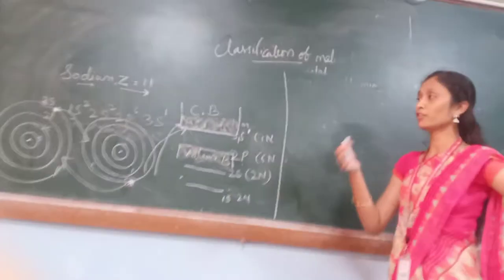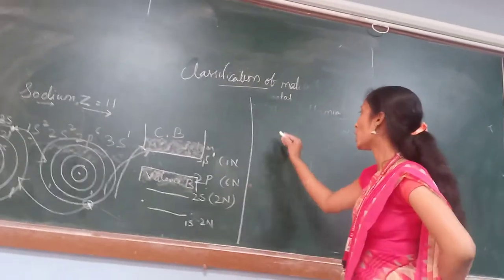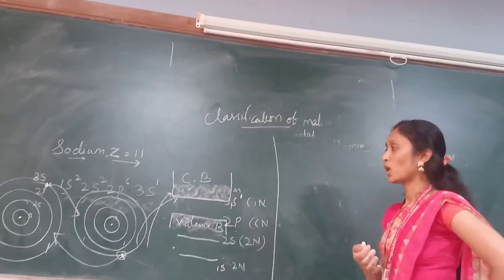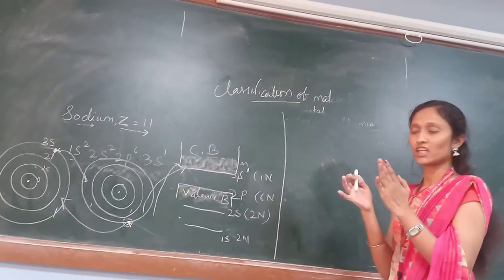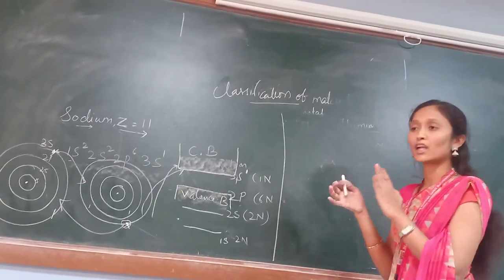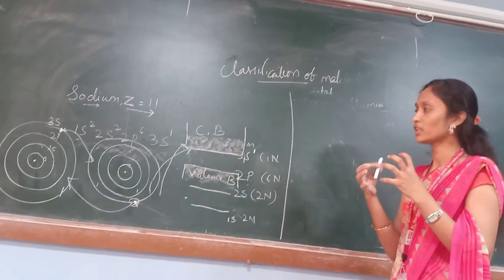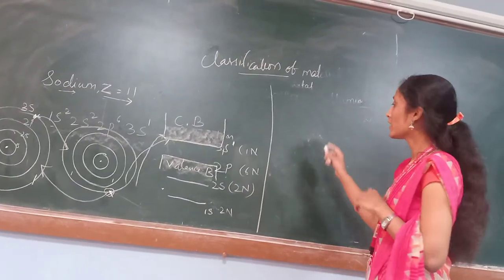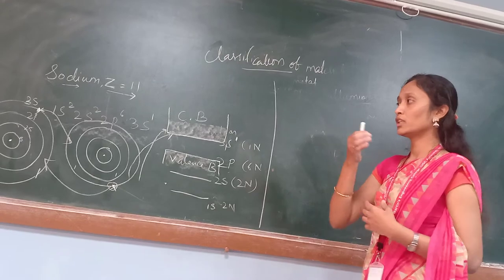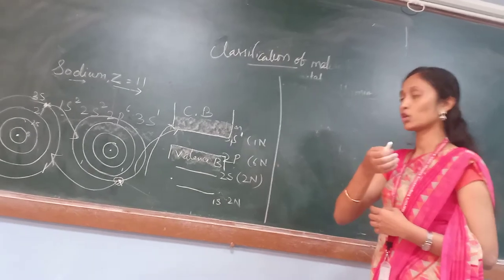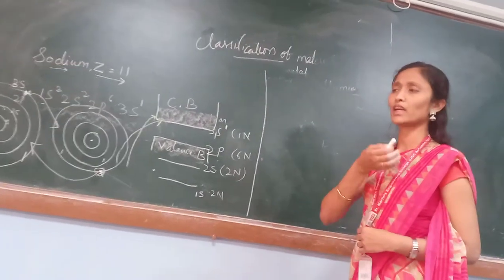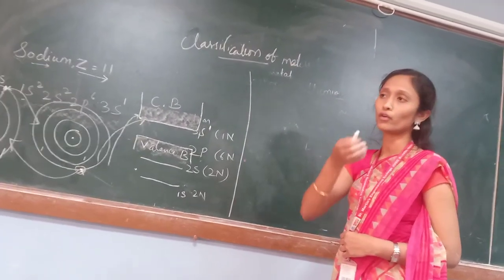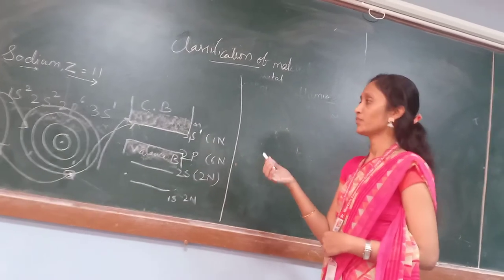In the gaseous state, electrons are loosely bound and may jump. When we enter into the solid state — the lattice — atoms come nearer, forming a lattice structure. In that case, when we apply some energy, electrons will flow from one atom to another, and conduction becomes possible.